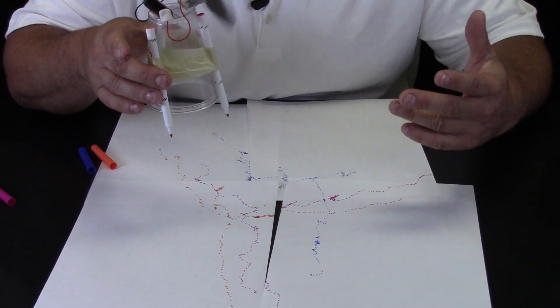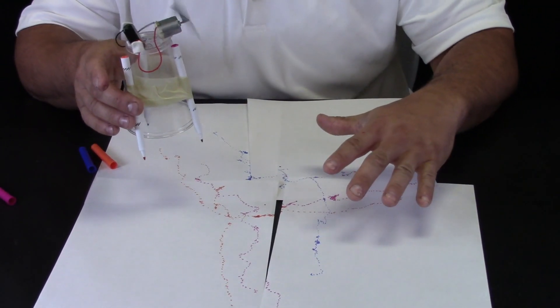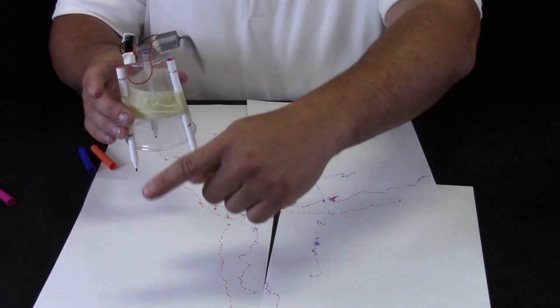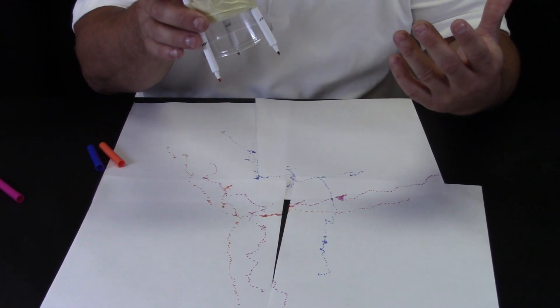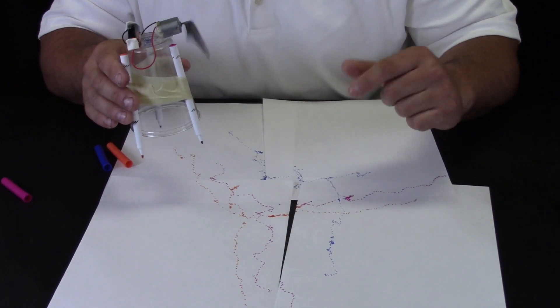Now obviously you do not want to do this on the kitchen table at home. You want to make sure you have paper down. I wonder what would happen if we created a boundary and just let this scooter go. We could create some really cool artwork.